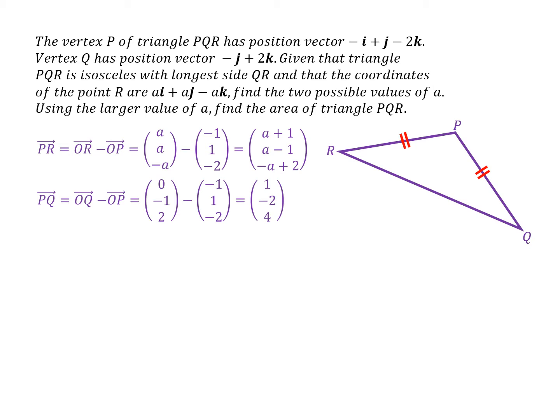Now, PQ using a similar method, the same method is one minus two, four. So I'm using the fact that the length of PQ and the length of PR are equal to each other.